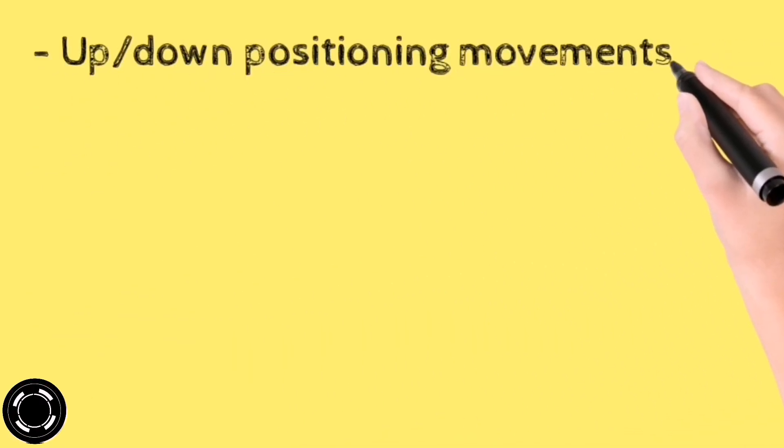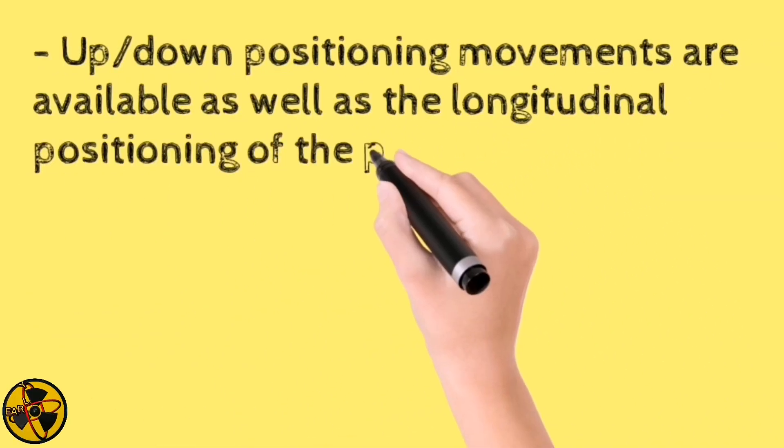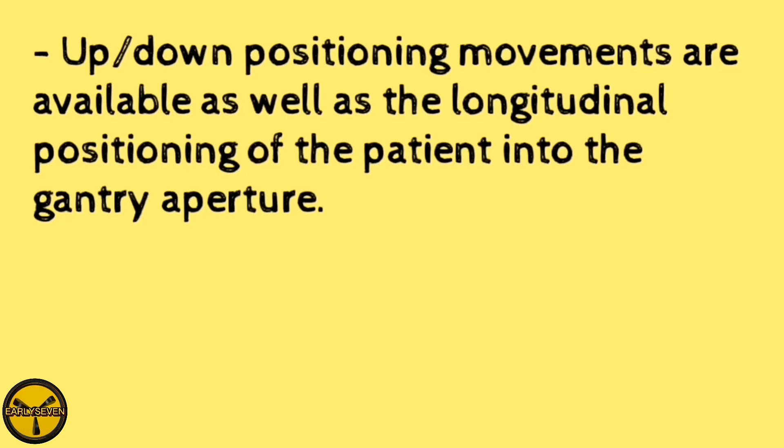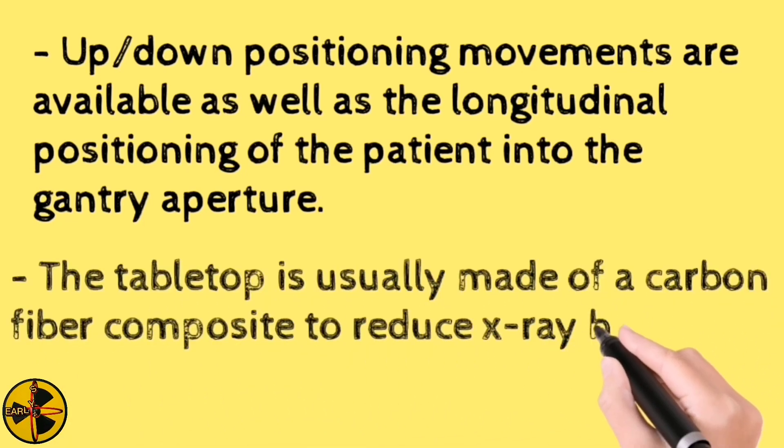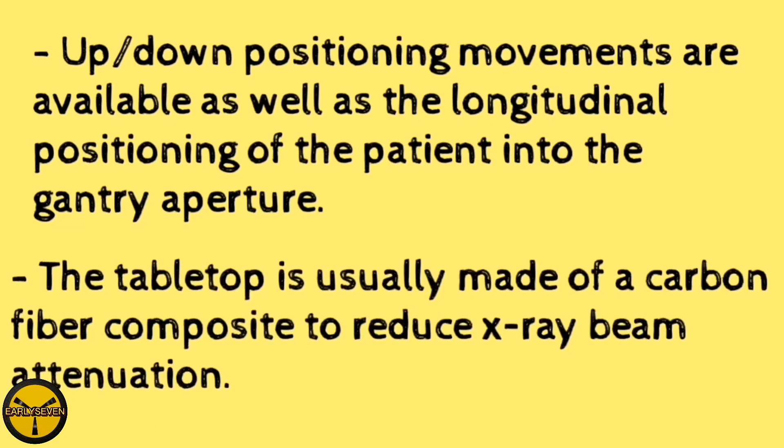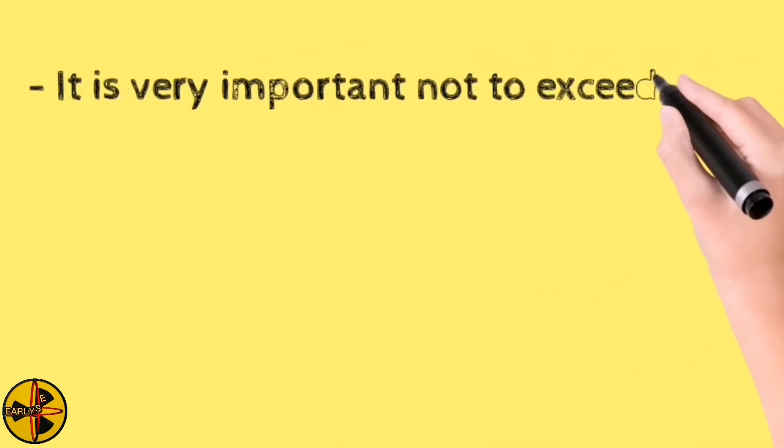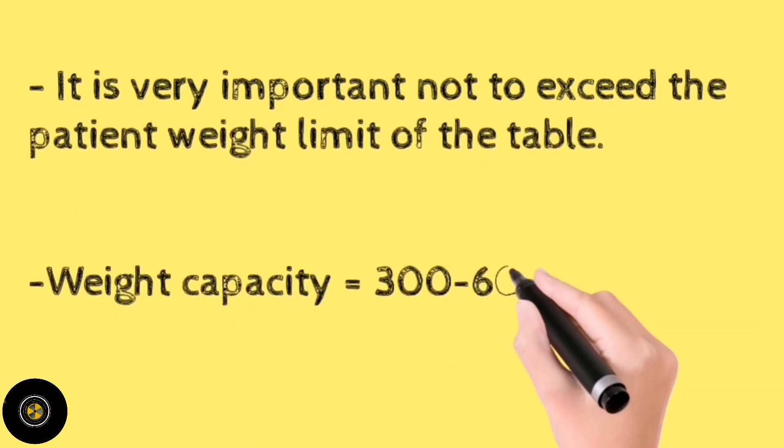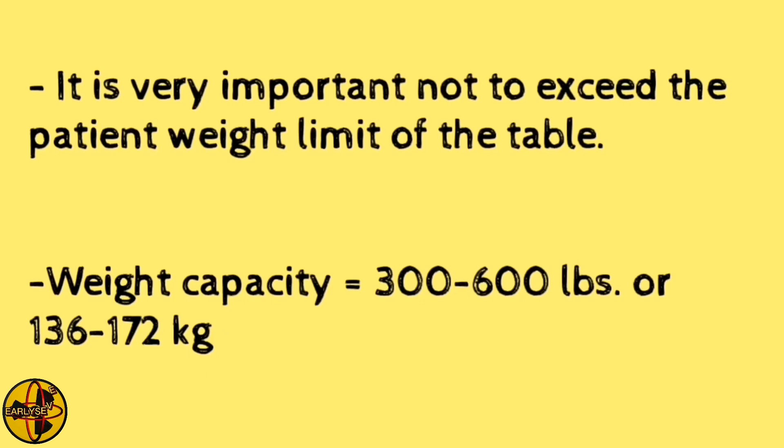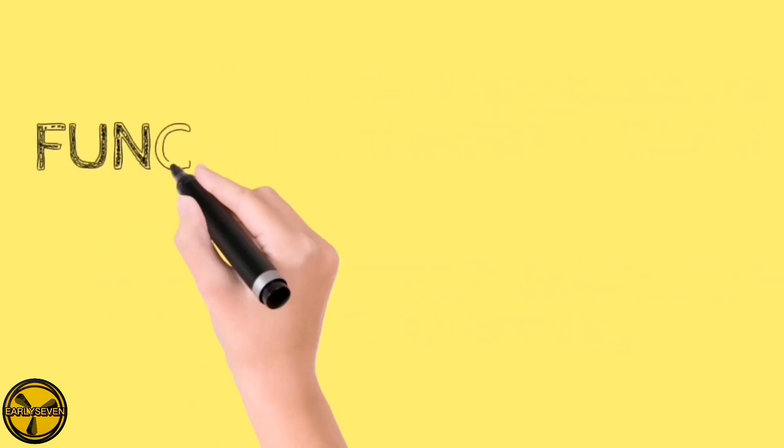Up and down positioning movements are available, as well as the longitudinal positioning of the patient into the gantry aperture. The tabletop is usually made of a carbon fiber composite to reduce x-ray beam attenuation. It is very important not to exceed the patient weight limit of the table. The weight capacity is 300 to 600 pounds or 136 to 172 kilograms.